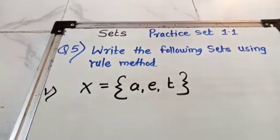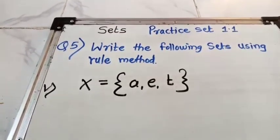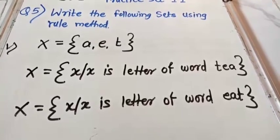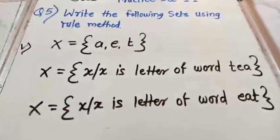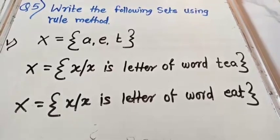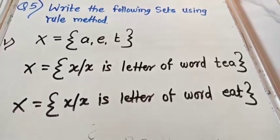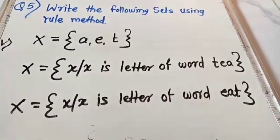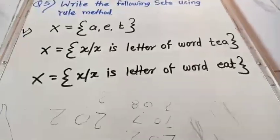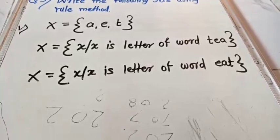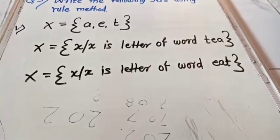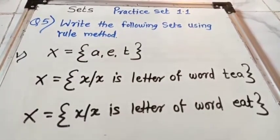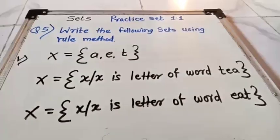Next example: X = {A, E, T} — letters. The answer can be written two ways: X = {x | x is a letter of the word 'ate'} or X = {x | x is a letter of the word 'eat'}. So our Practice Set 1.1 is completed here. Thank you.